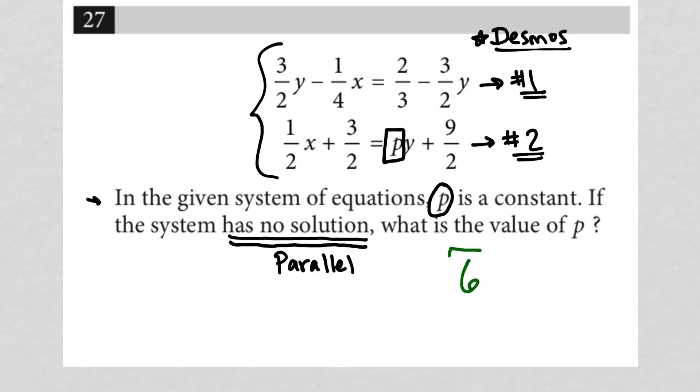The constant P equals six is the value of P that leads the system to having no solution, which again means that the graphs from those equations are parallel. So no solution means parallel.